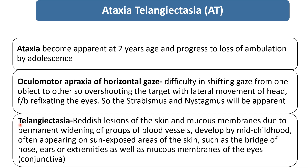Regarding telangiectasia: these are reddish lesions of the skin and mucous membrane because of the permanent widening of a group of blood vessels. They develop by mid-childhood, so in early childhood the child will not have manifestations of telangiectasia. They appear on sun-exposed areas of the skin — over the bridge of the nose, ears, extremities — as well as the mucous membrane of the eyes and conjunctiva.